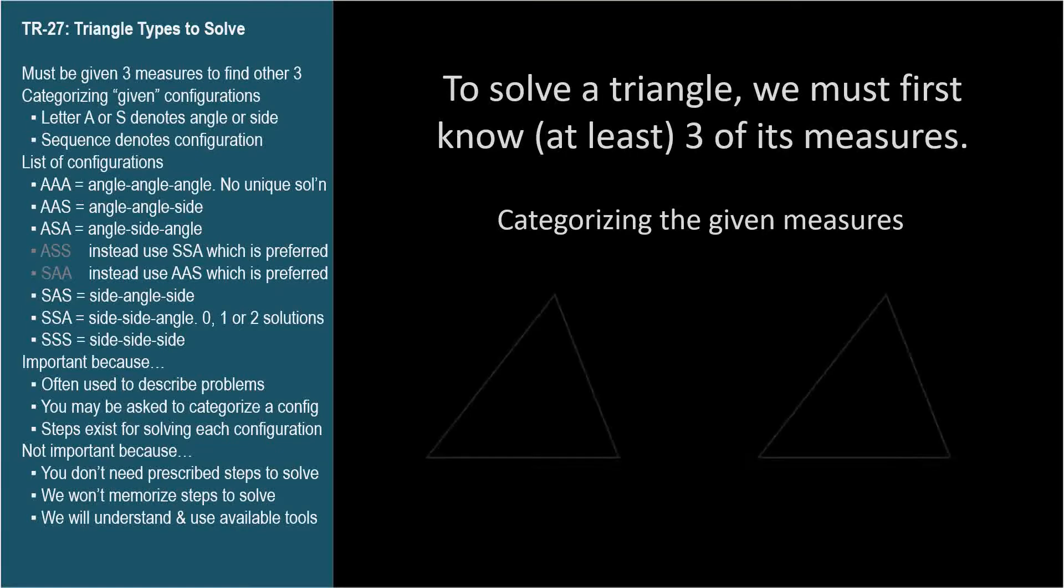Let's start with an example. In each of these triangles, we're given two angles and a side. In the first triangle, the given side is between the two given angles, so we'll call the first triangle ASA, which means angle-side-angle. The side is between the angles in the label to match the configuration of the known values in the triangle.